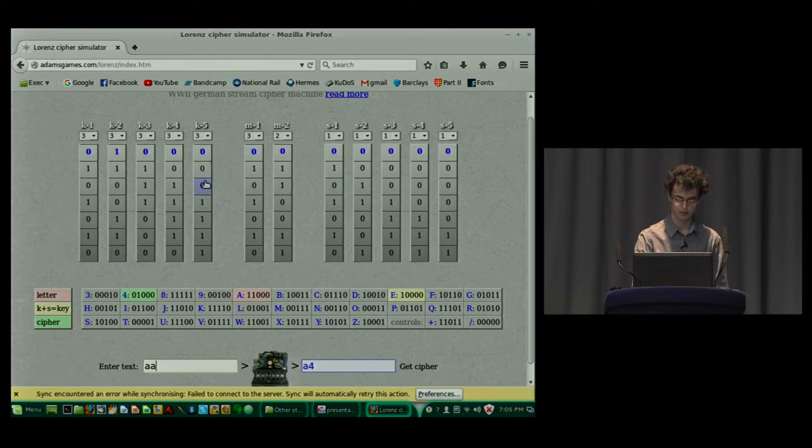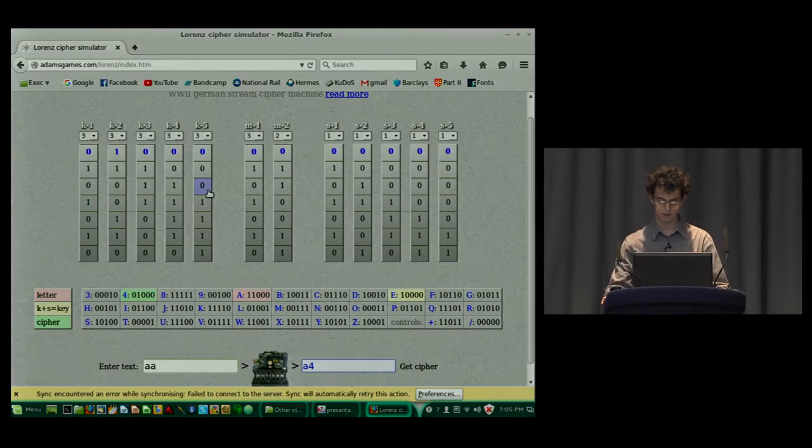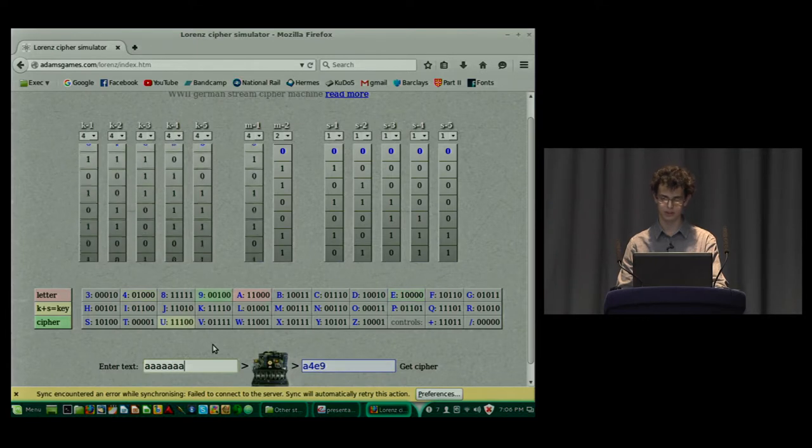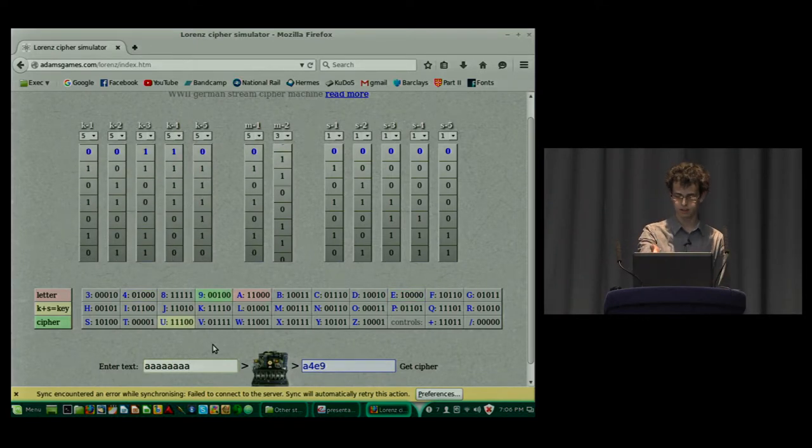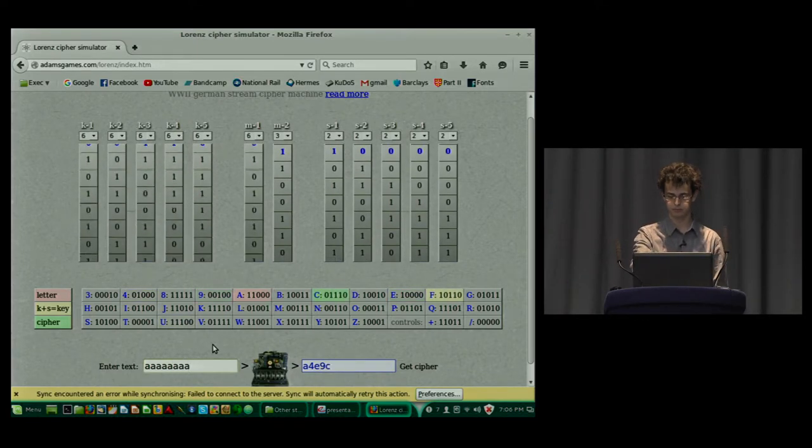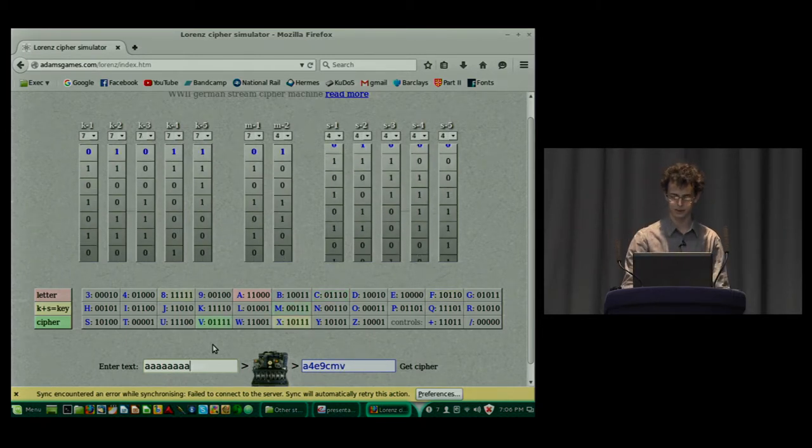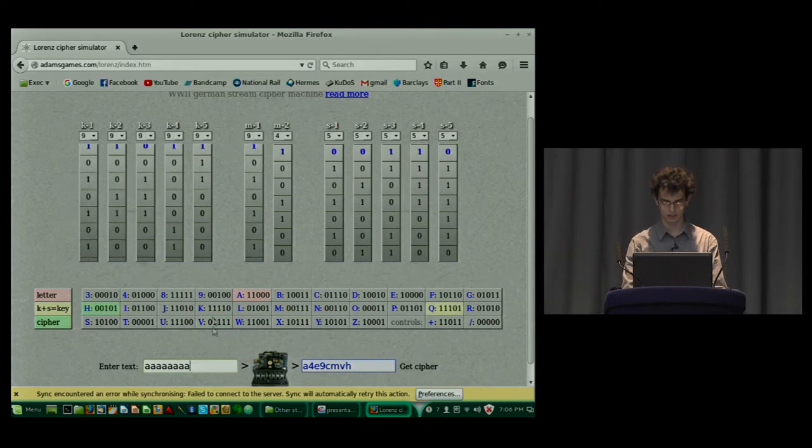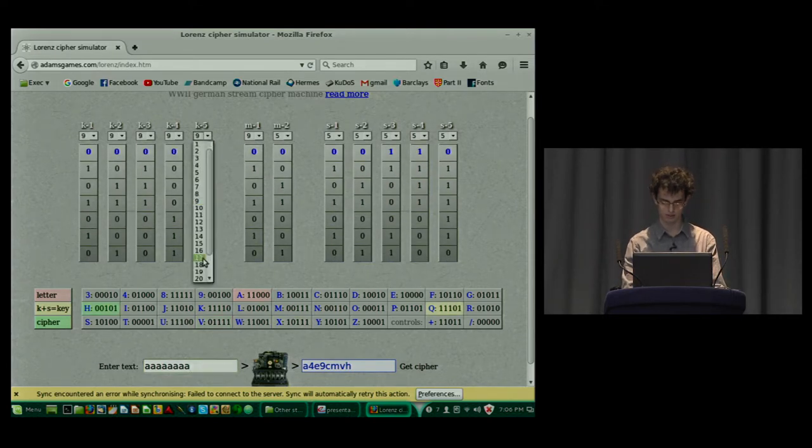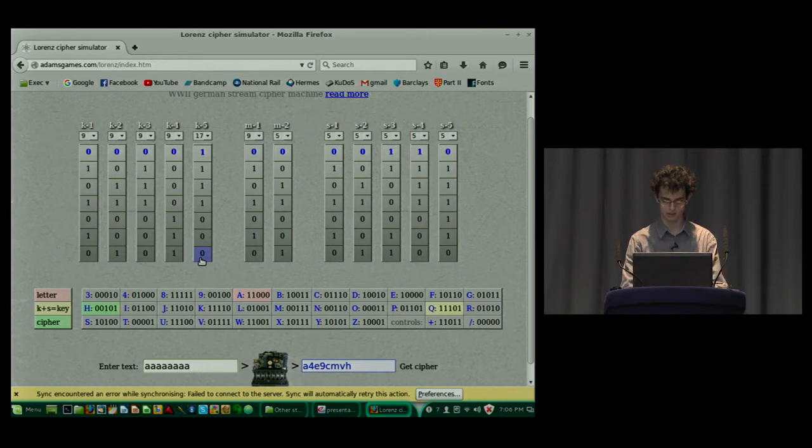Each of these ones and zeros is a cam that represents. They're settable. You can change them. Sort of blend little switches on the actual wheels of the Lorenz machine. I'll carry on typing in. The psi wheels on the right turned only when the rightmost motor wheel had a one in the first place about half the time. You can also change the position of the wheels. So, that changes your output.